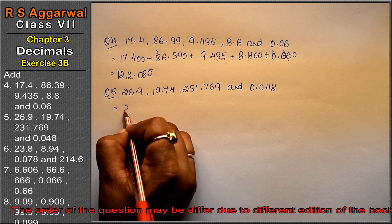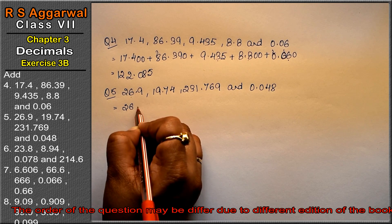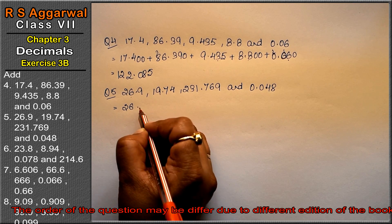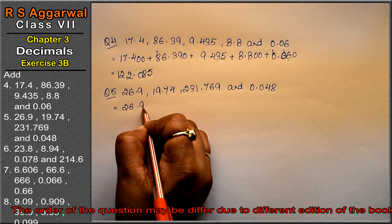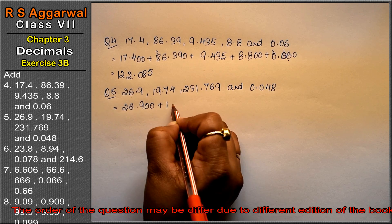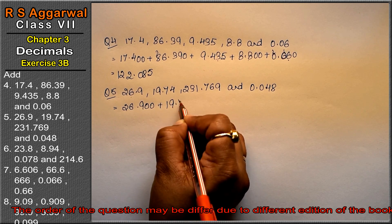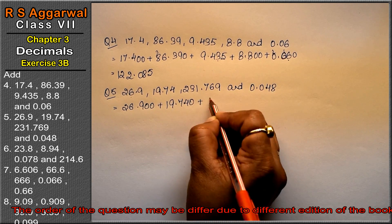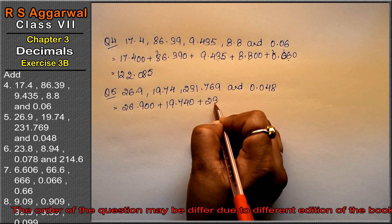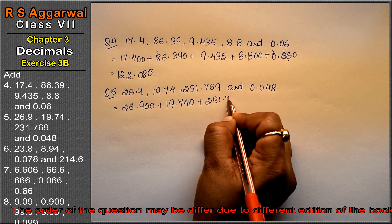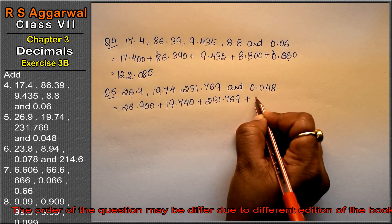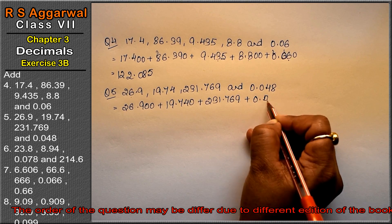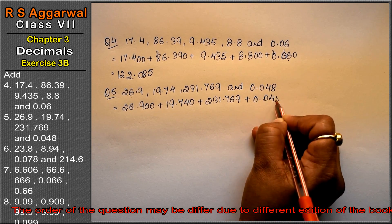Now like fraction. There are 3 digits after the decimal point. So: 26.900 plus 19.740 plus 231.769 plus 0.048.